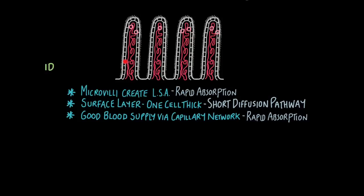The surface layer of the villi is one cell thick. This provides a very short diffusion pathway, so basically these soluble molecules diffuse very quickly. They don't have to spend a lot of time battling their way through many cells. And finally, you can see here, there's a good blood supply via a capillary network. Again, this allows soluble materials to be transported away very quickly, maintaining a concentration gradient so it can continue to diffuse through.